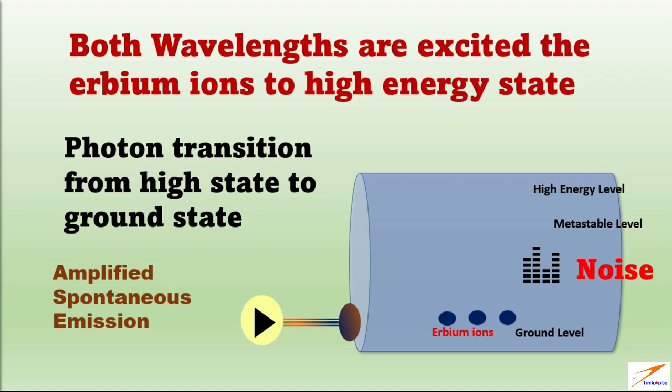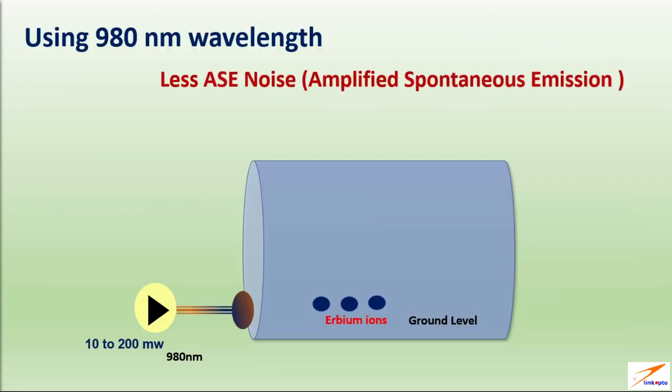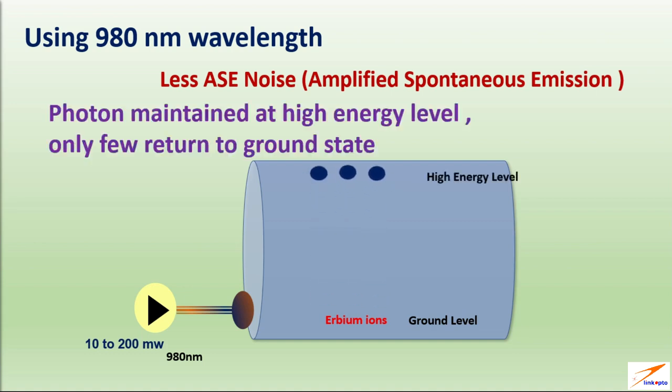Which makes the difference of EDFA pump wavelengths. When using 980 nanometers wavelength, produce less ASE noise. The reason is using 980 nanometers as source, photons inside the erbium fiber are maintained in high level state. Only a small percentage of ions return to ground state, which produce low noise.